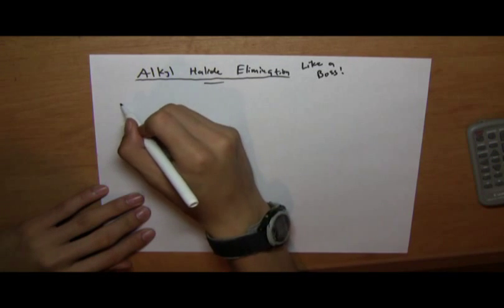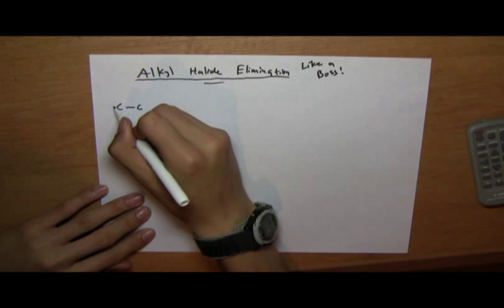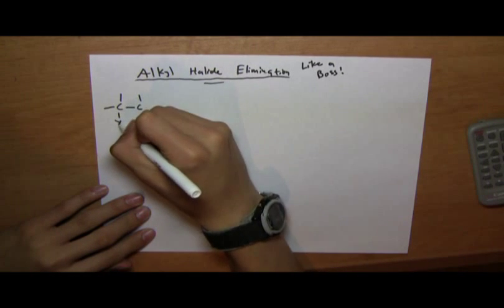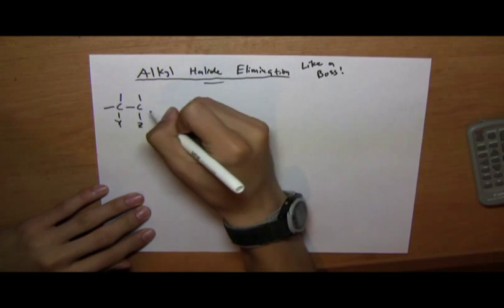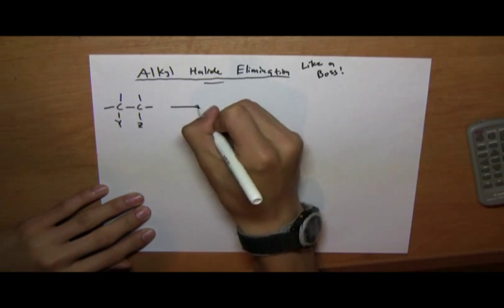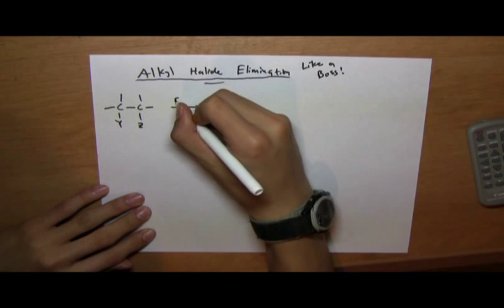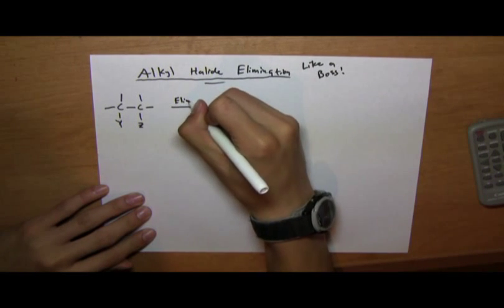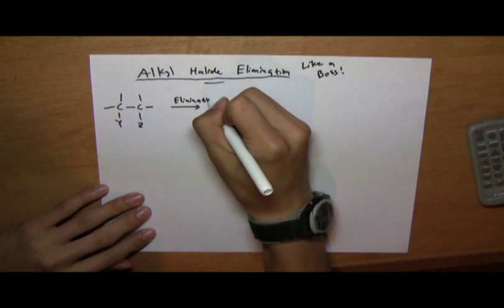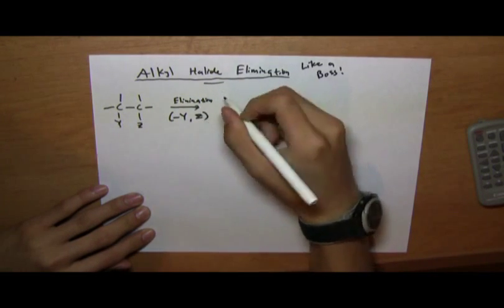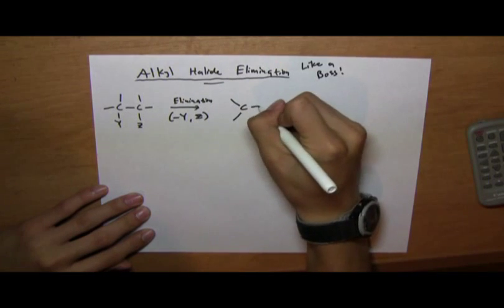So this would be the general formula of an elimination reaction. In an elimination reaction, Y and Z are always removed or eliminated. We get an alkene as our product.